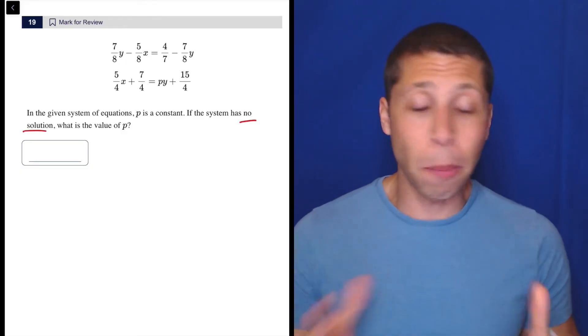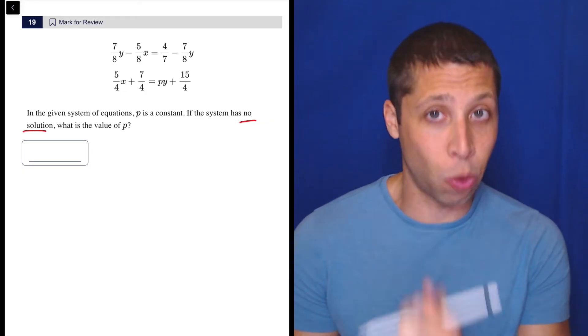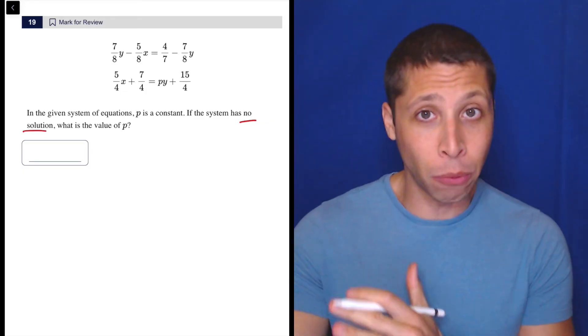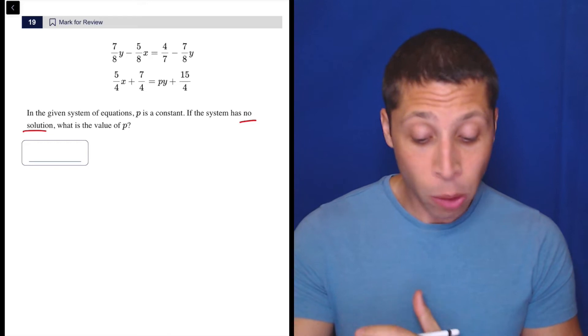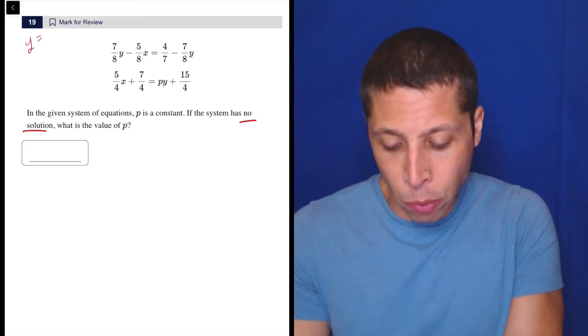When it comes to the number of solutions, the first thing we need to ask is, do we have an x squared? If we have a quadratic, different rules, different process. Here we don't. These are basically lines. They don't look like lines, but that's how we're going to want to think about it.